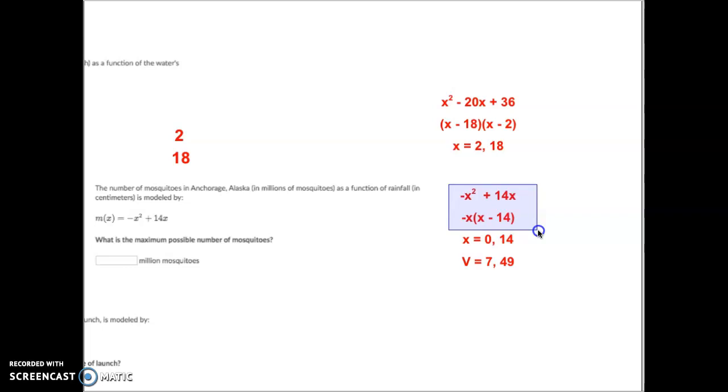I then apply zero product property and I get x equals zero and the second one would equal 14. So that's where I got to that. Now if you look at your two x-intercepts, you know that your vertex happens right in the middle of those two x-intercepts. What is right in the middle of 0 and 14? You would probably say 7, which would be correct. So the vertex is when x equals 7.